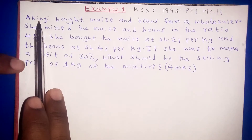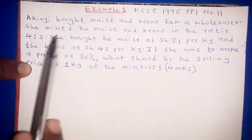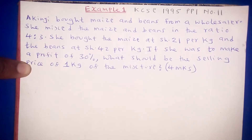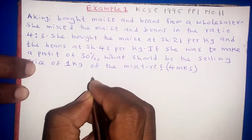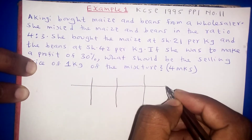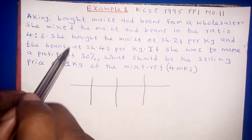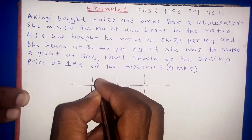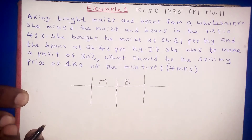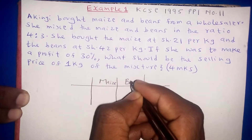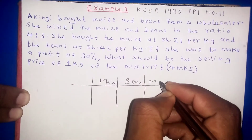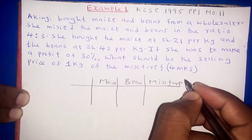The question reads that Akinyi bought maize and beans from a wholesaler, then she mixed the maize and beans in the ratio of 4 to 3. We have a small table here with the components stated in the question: maize, beans, and the mixture of the two.